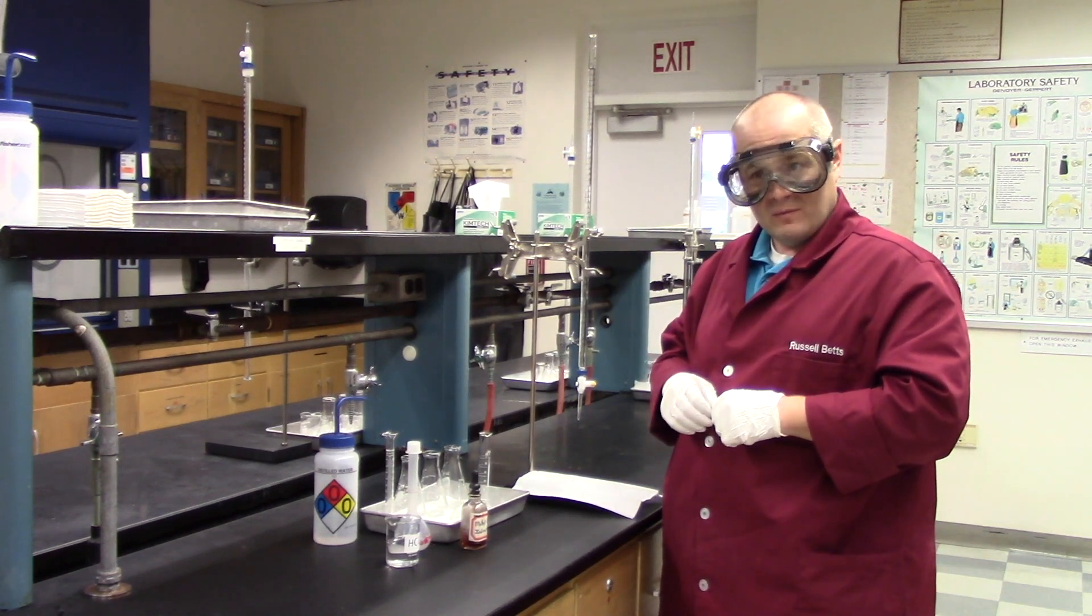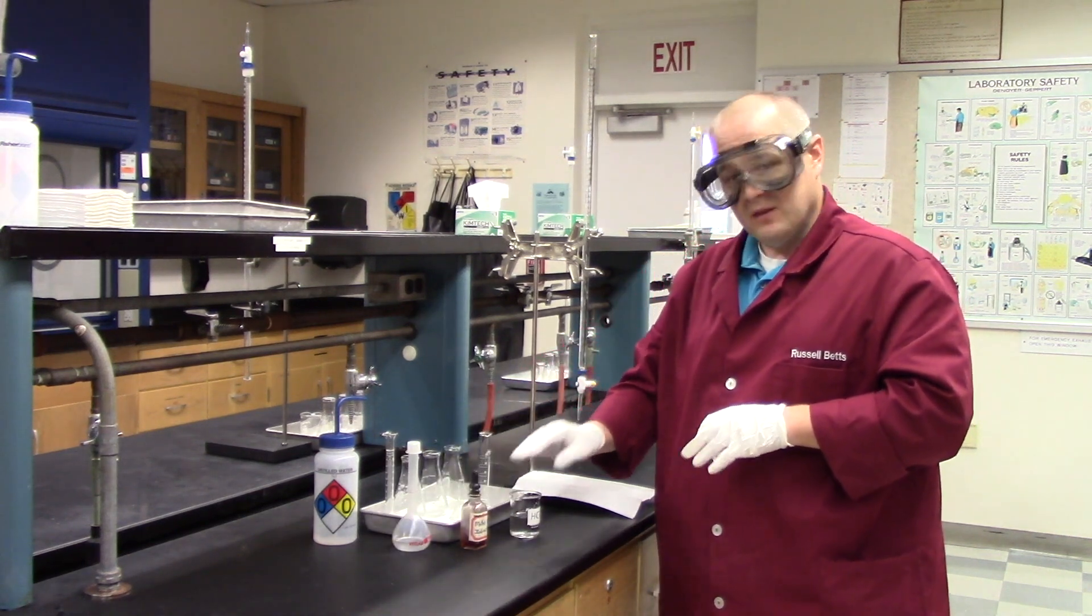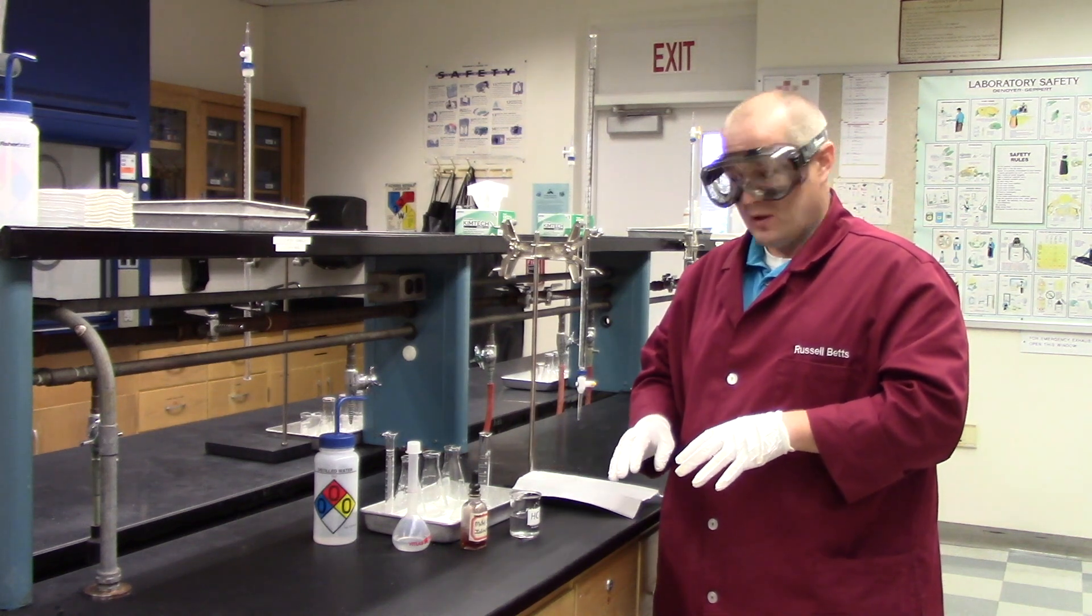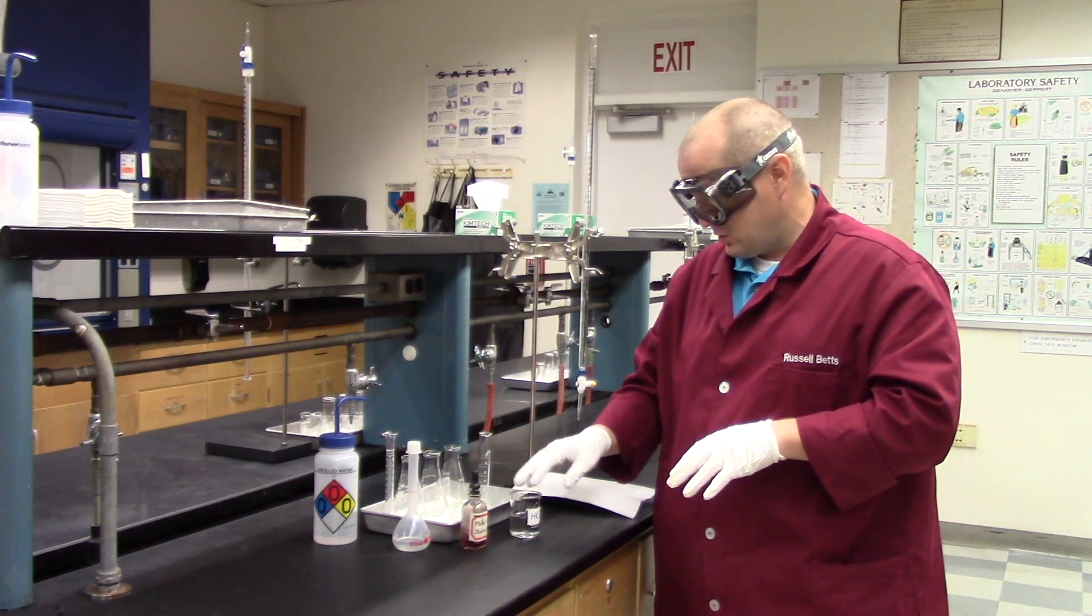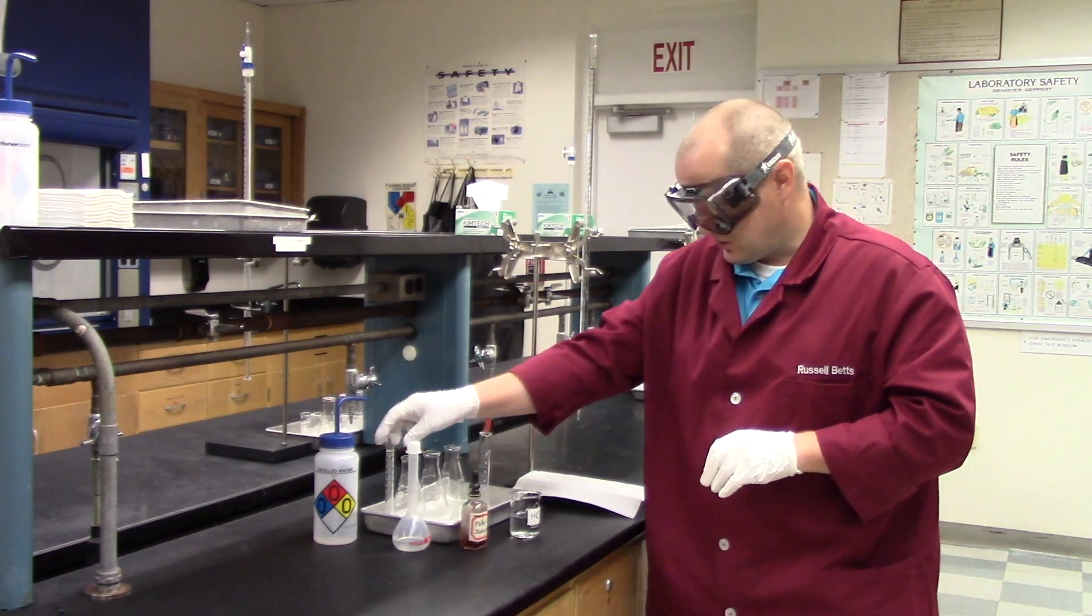Now we have to make our acid solutions. Here I have the acid in this little beaker. It's in the fume hood. We have the concentration of this acid written down in our notebook. Now we need to transfer 10 milliliters of this solution into each of these Erlenmeyer flasks. So let's do that now.